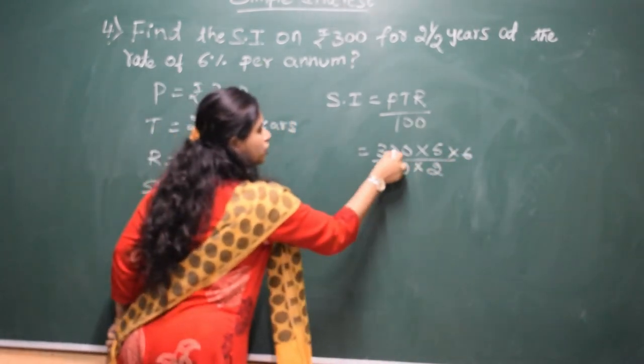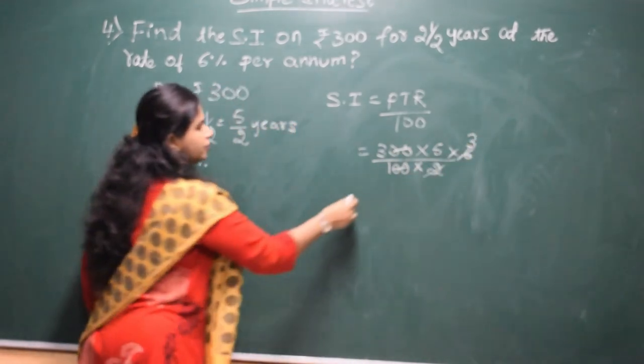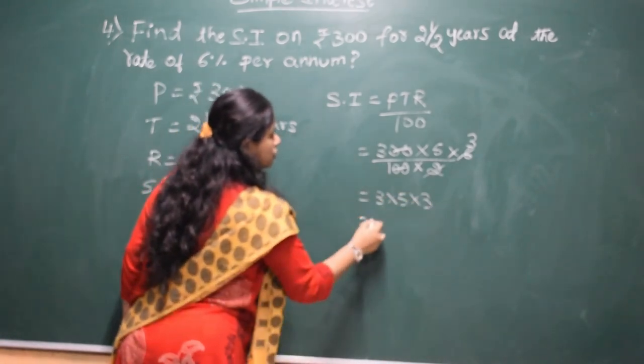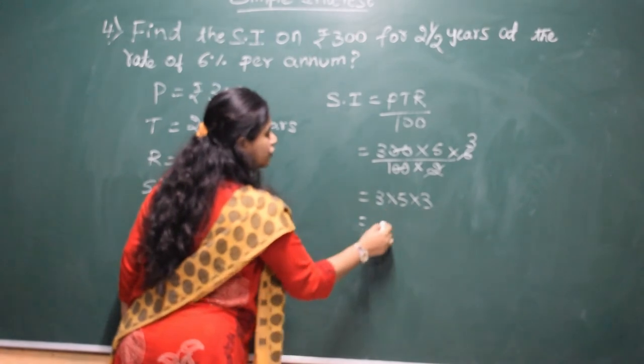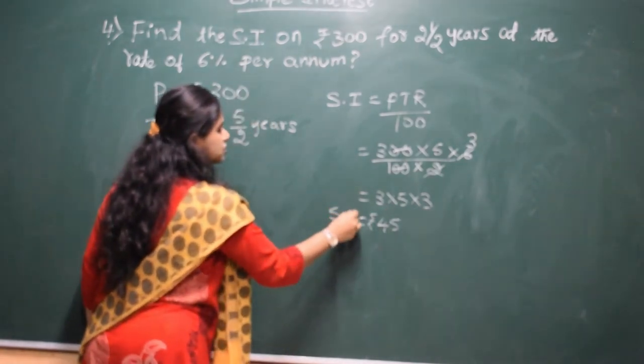Cancel this, two zeros. Now, you take two ones up, two threes up. Now, multiply 3 into 5 into 3. 3, 5 is 15, 5, 3 is 9, 9, 5 is 45. So, rupees 45 is the simple interest.